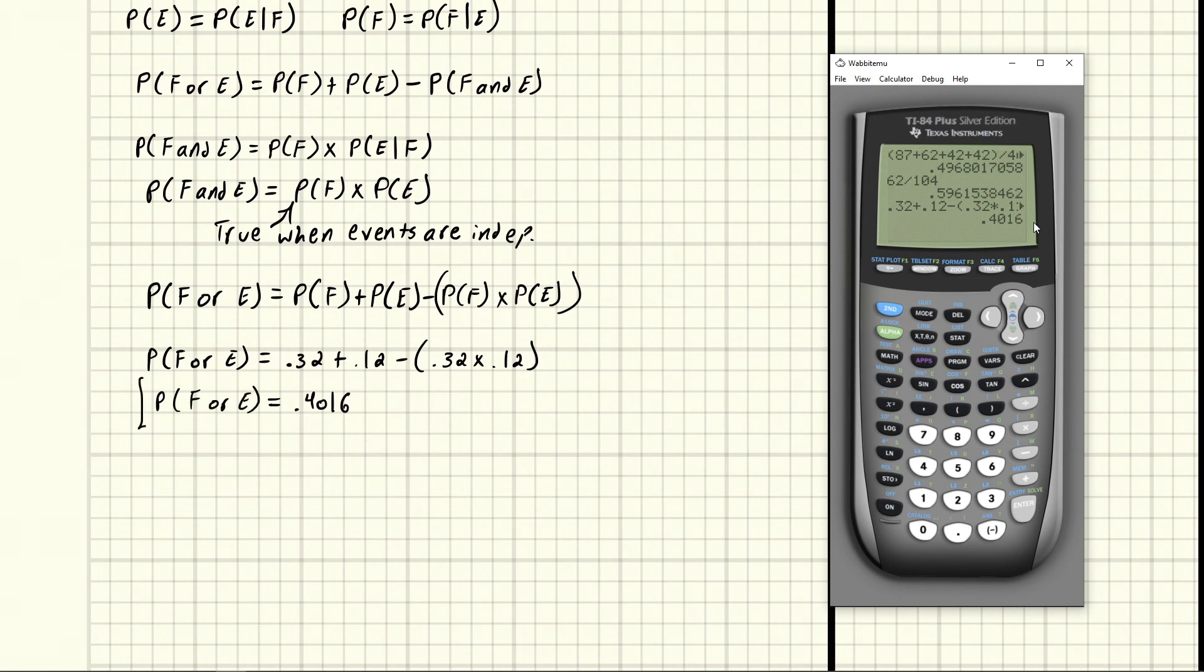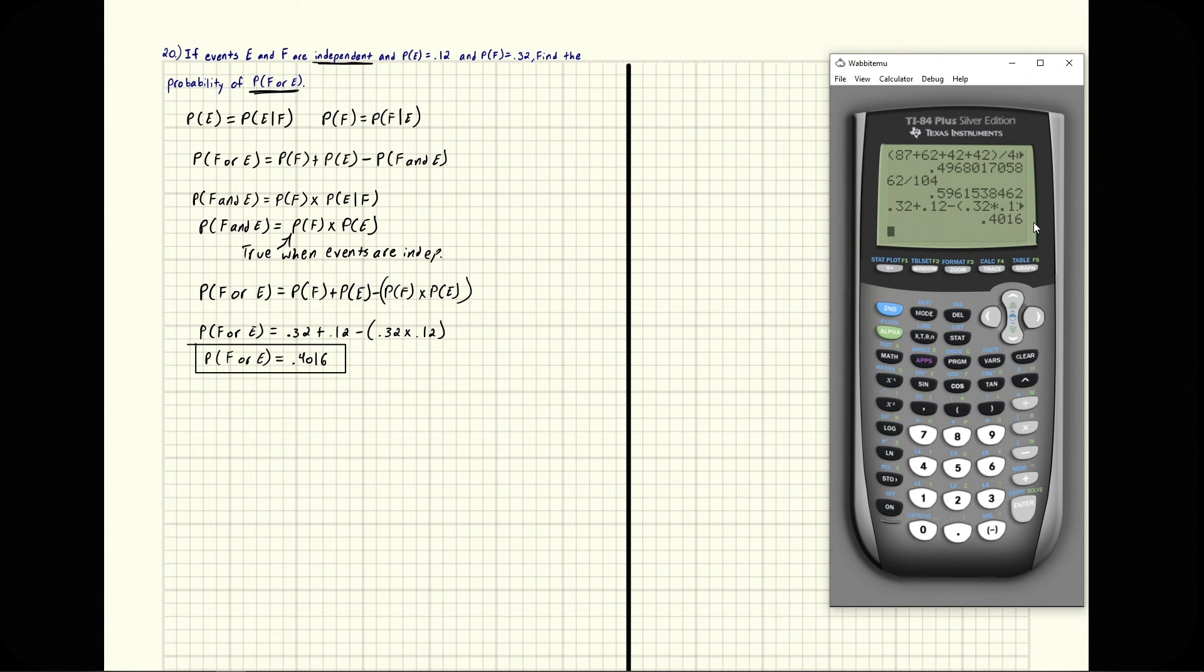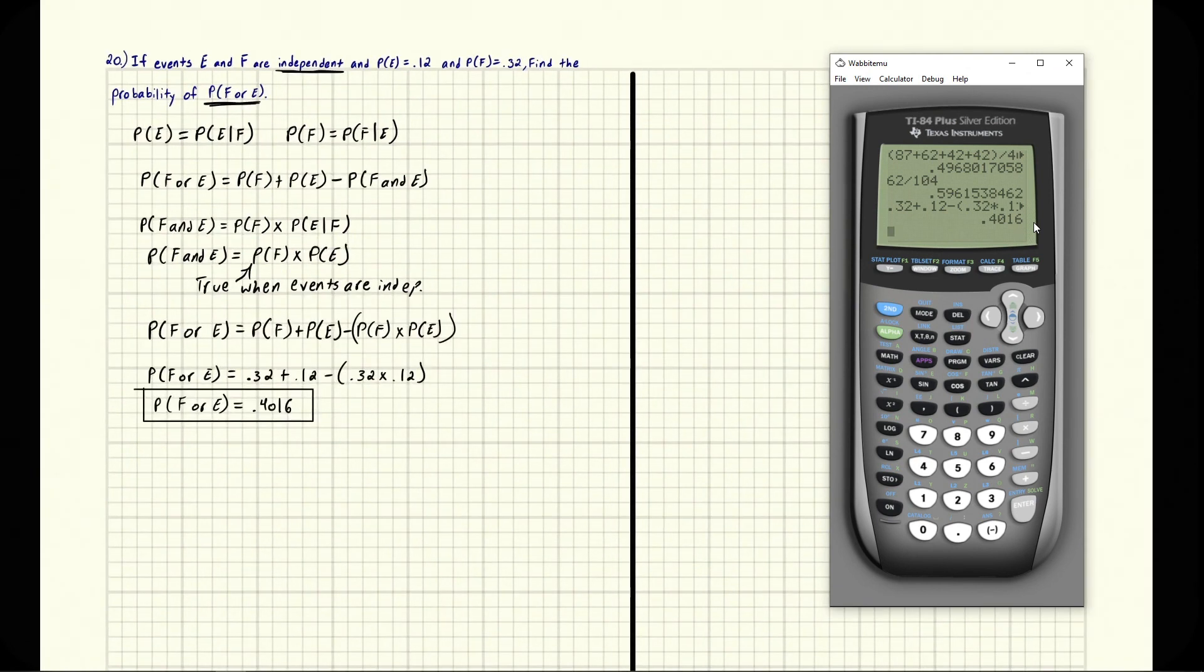So that is how you do this problem. Now, I know that a number of people will jump the gun on this and they'll misinterpret independent as mutually exclusive and use the mutually exclusive form of F or E, and that'll actually get you the wrong answer. So as you can see by the work we've done, we have to consider the definition of independence in order to get the correct formula.